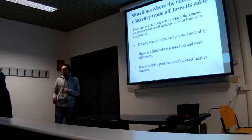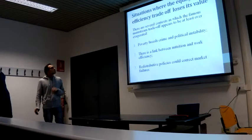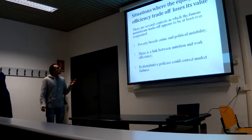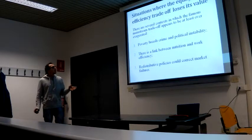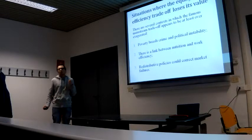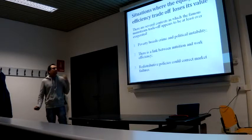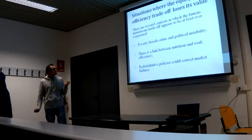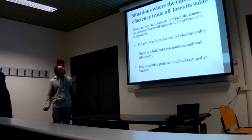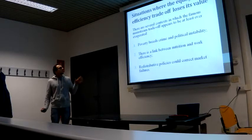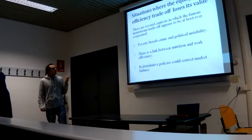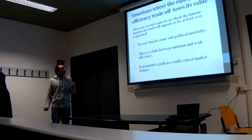What the paper wants to analyze is first of all if there are cases in which this trade-off seems not to work or at least seems to be over-exaggerated. The first case is when poverty breeds crime and political instability — the case of very corrupted countries in which a policy for poverty alleviation could also solve some microeconomic problems due to political instability. The second case is when there is a link between nutrition and work efficiency, that is to say, in countries with a very high level of malnourishment, a better provision of food can help also the efficiency of policy.